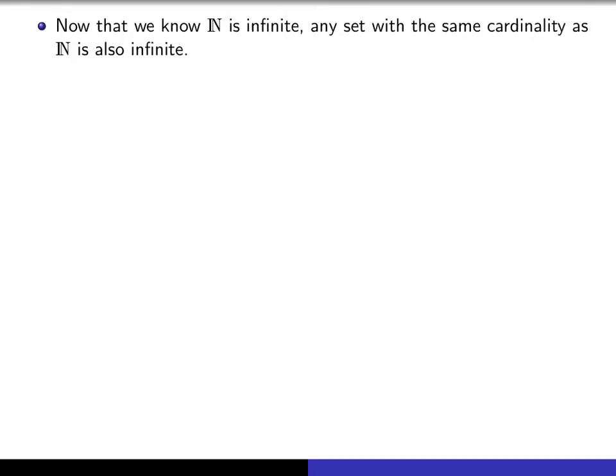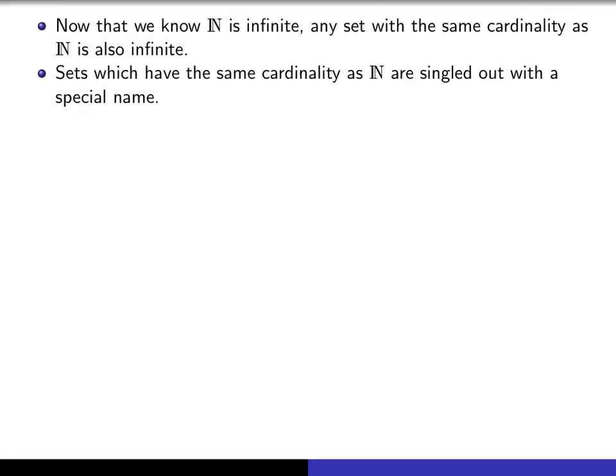How can we produce more infinite sets? We don't have to keep going through the same argument. Now that we know that ℕ is infinite, then any set that has the same cardinality as ℕ is also infinite. Remember, having same cardinality means there's a bijection between ℕ and that set. Before we give examples, I want to point out that sets that have the same cardinality as ℕ are infinite, but they're infinite of a special nature, and we give them a special name.